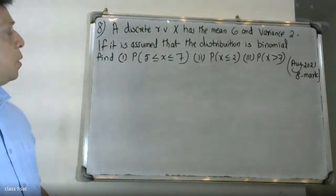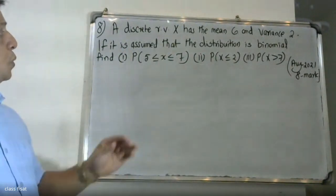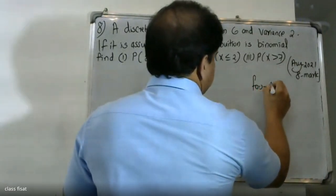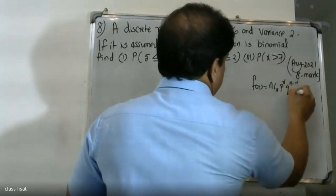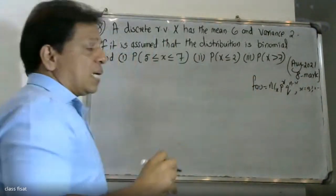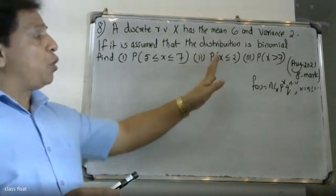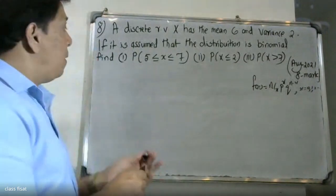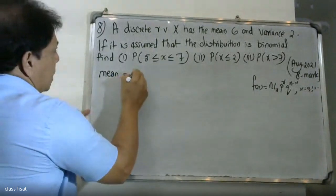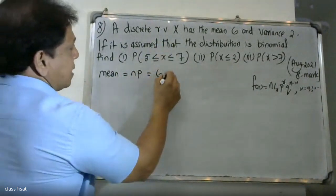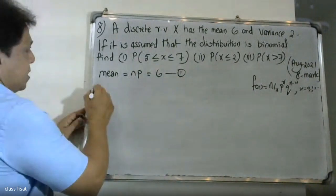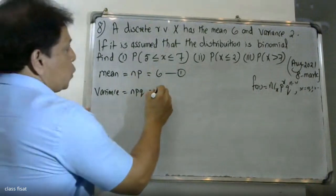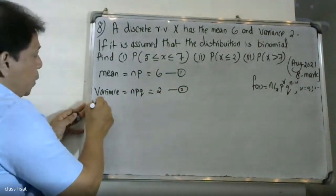We need to solve this problem. The discrete random variable has mean 6 and variance 2, and we assume the distribution is binomial. The binomial distribution function is f(x) = nCx times p raised to x times q raised to n minus x, where x = 0, 1, ..., n. The mean is np = 6 and the variance is npq = 2.